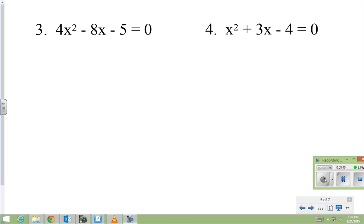All right, number 3 we're making a little harder here because we have an a value. So again, first thing I'm going to do is just get my x squared and x by itself on one side. So I'm going to add 5 to both sides. 4x squared minus 8x equals 5.